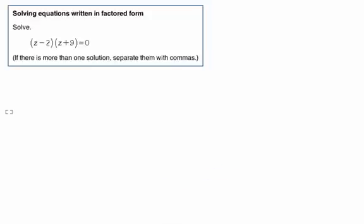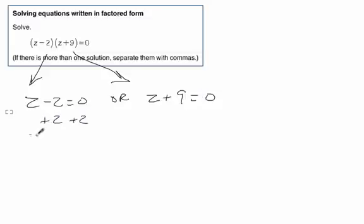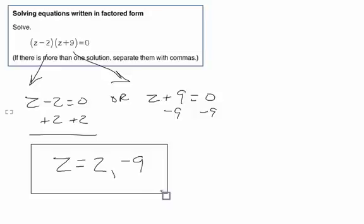Let's do one more quick example. Two mini problems: z - 2 = 0 or z + 9 = 0. Solving these, we get z = 2 and z = -9. That's it. Have fun!